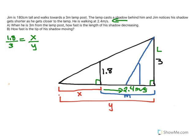So if we think about that, we can say y must equal x plus m, right? The entirety of the base must equal the length of his shadow, which is x, plus whatever's left over between him and the lamppost, so that's m. So I'm just going to rewrite this ratio as 1.8 over 3 equals x over x plus m.